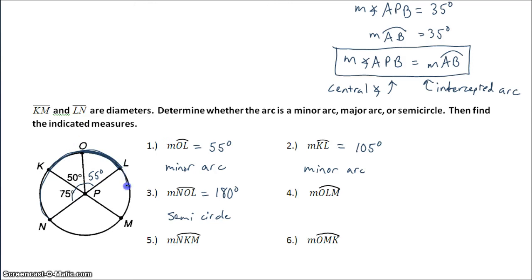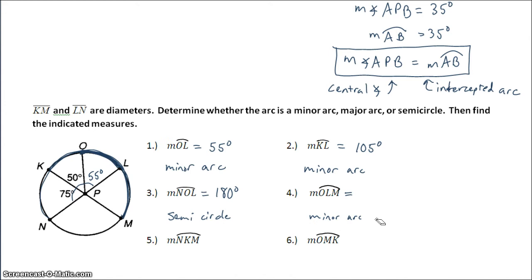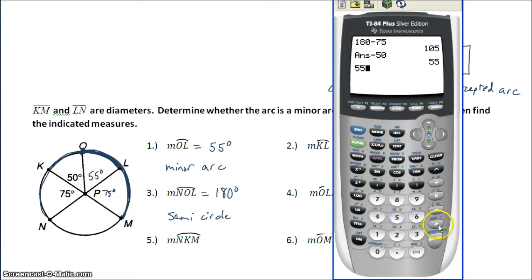Arc OLN — even though OLN has three letters, the arc from O to L to N is actually a minor arc. So make sure you're tracing out the arc to confirm whether it's minor or major; just because it has three letters does not mean it's a major arc. To find that measure: this angle is 75 degrees, so the opposite angle here also has to be 75 degrees. The measure of arc OLN uses these two angles added together: 55 and 75.